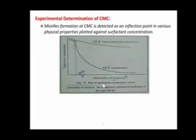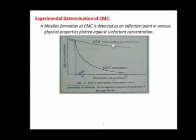For example, a graph of equivalent conductance versus normality (concentration) of surfactant is obtained. For a non-surfactant electrolyte, the graph is a straight line without any inflection. For a surfactant system, the equivalent conductance first slightly decreases, but after a particular surfactant concentration there is a sharp change.